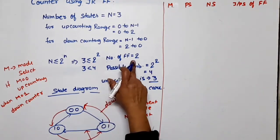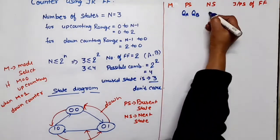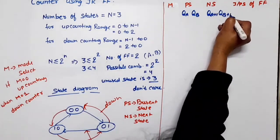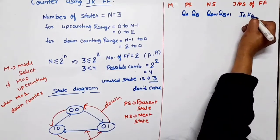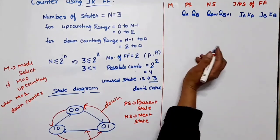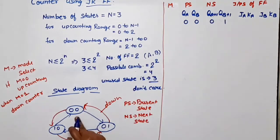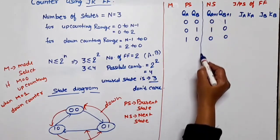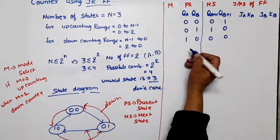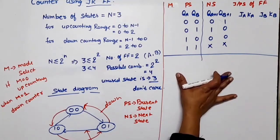We have two flip-flops, A and B, with output bits QA and QB for the present state. Next state will be QA+1 and QB+1. The JK flip-flop inputs will be JA, KA, JB, and KB. For up counting (M=0), states go: 00 → 01 → 10 → 00. The unused state 3 (11) is considered as don't care. This completes the up counting portion of the state table.